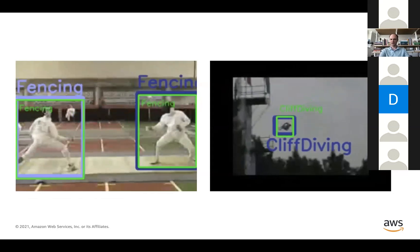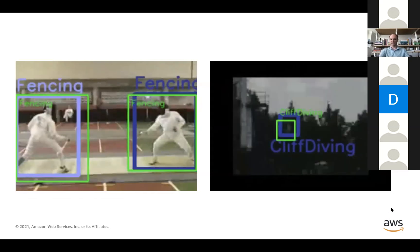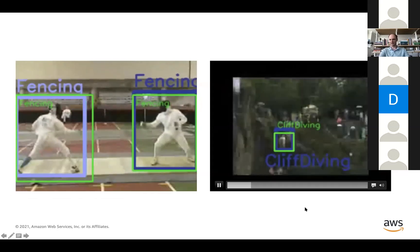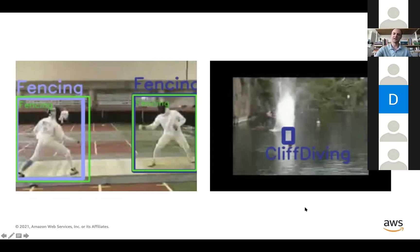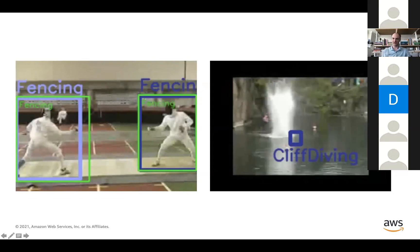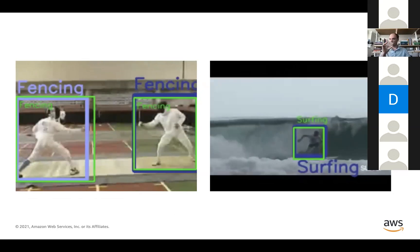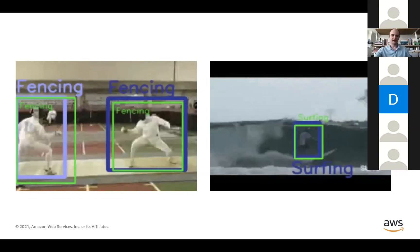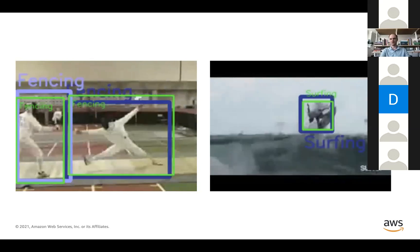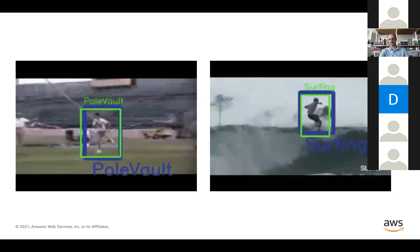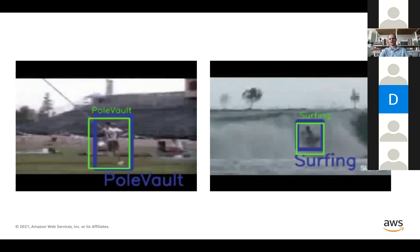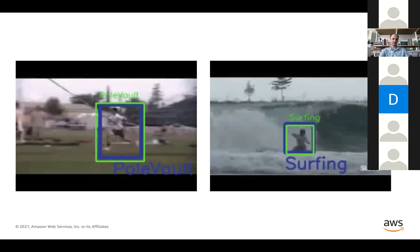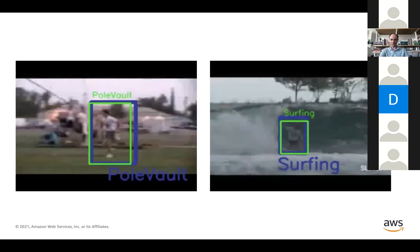Here are a couple of examples. On the right is a failure case — you still get some hallucinated bounding boxes. But overall, the network is able to predict actions across a wide range of datasets: AVA, UCF-101, and a number of others.